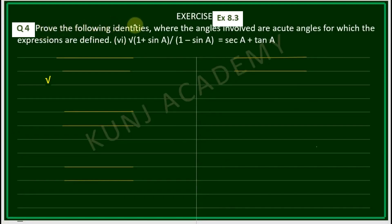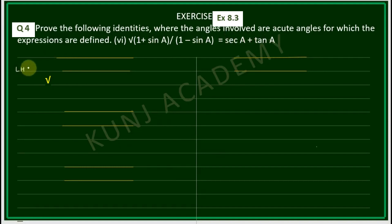Prove that the following identities where the angles involved are acute angles for which the expressions are defined. Number 6: root of (1 + sinA) upon (1 - sinA) is equal to secA + tanA. Left hand side is root of (1 + sinA) upon (1 - sinA).